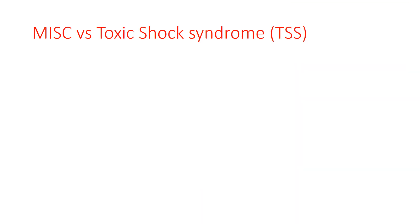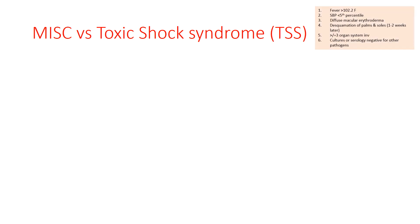Comparing MIS-C with Toxic Shock Syndrome: TSS is defined as fever more than 102.2°F, systolic blood pressure less than the 5th percentile (state of shock), diffuse macular erythroderma, desquamation of palms and soles 1–2 weeks later, involvement of more than or equal to 3 organ systems, and cultures or serology negative for other pathogens — i.e., TSS is positive for staphylococcus or streptococcus.